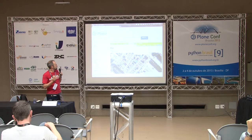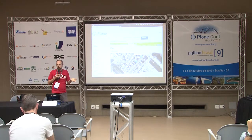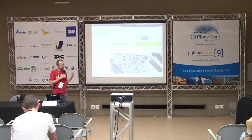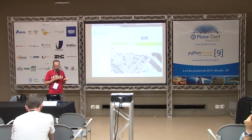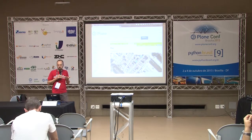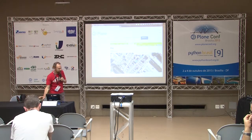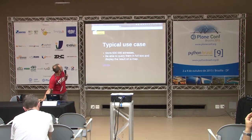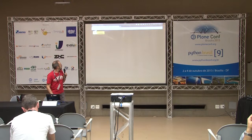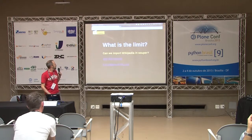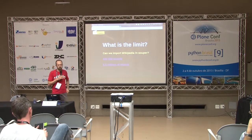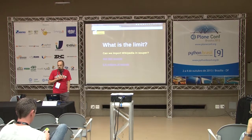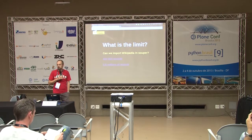Half a million addresses. Try to do that with Archetypes or Dexterity and you're going to crash your Plone site. It's really responsive, works really nicely. So that was my initial case, and it works. But at this point I decided to see if I can go higher. What's the limit, basically?